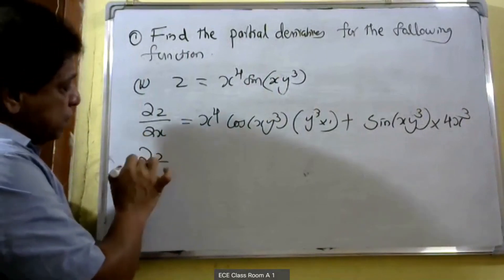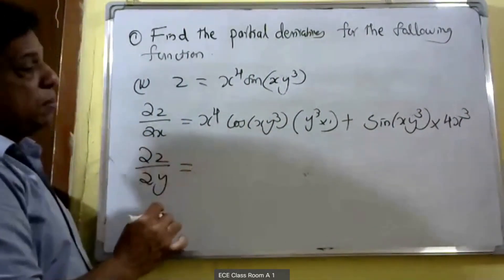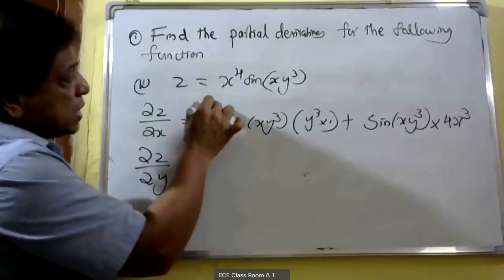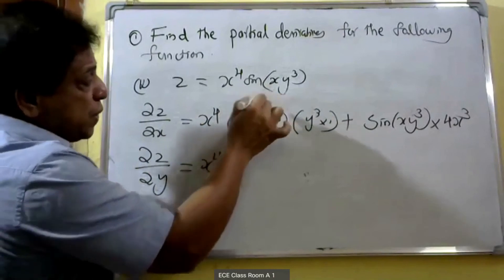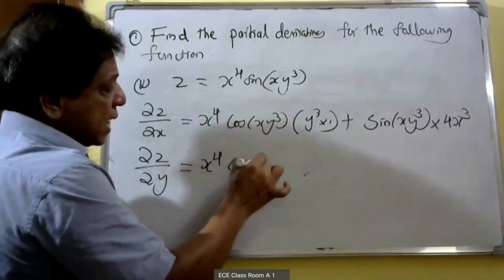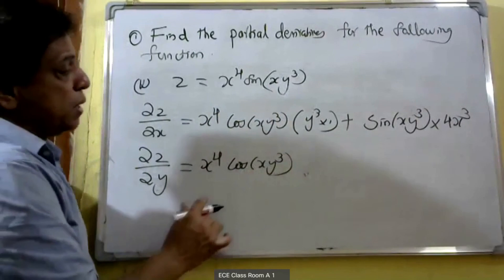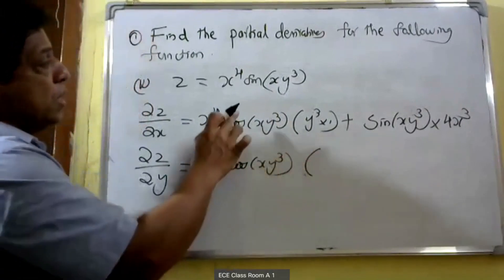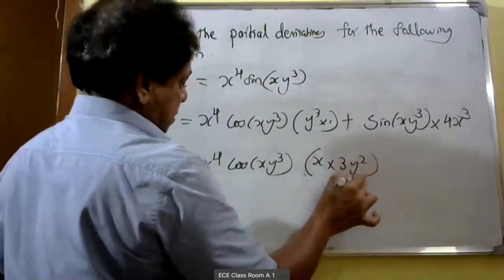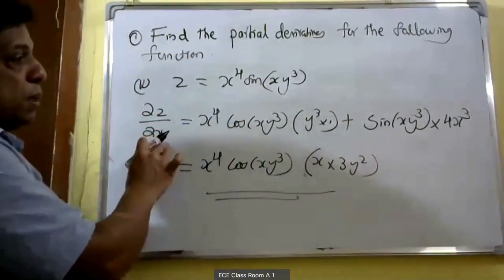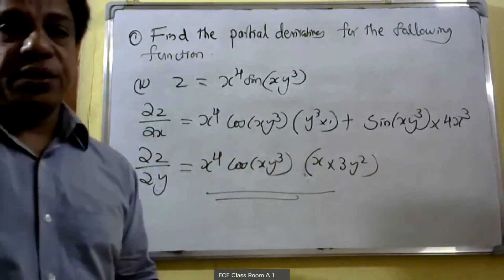Similarly, ∂z/∂y: x⁴ is a constant, so x⁴ into derivative of sin(xy³), that is cos(xy³) into x into 3y². Therefore ∂z/∂y is equal to x⁴ cos(xy³) into 3xy².